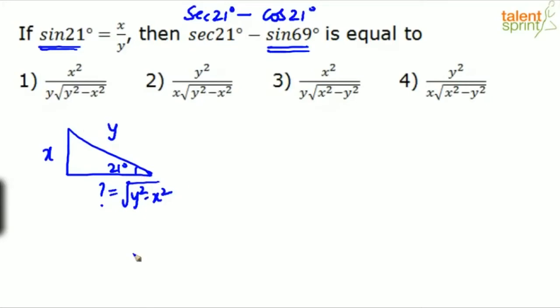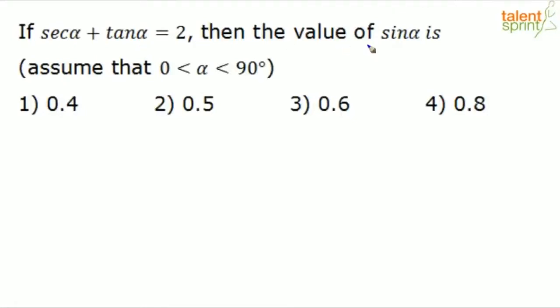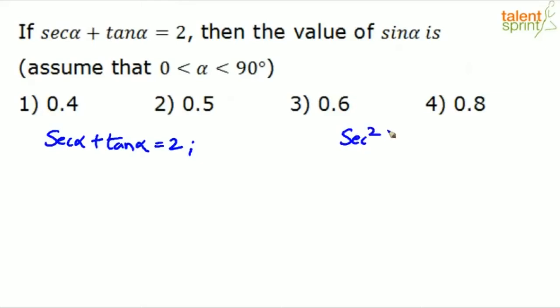Next problem: if secant α plus tan α equals 2, find the value of sine α, where α lies between 0 and 90. We'll solve it using the actual concept. The moment you see secant α plus tan α, something should strike you — you know that sec²θ minus tan²θ equals 1, which is one of the most important identities.